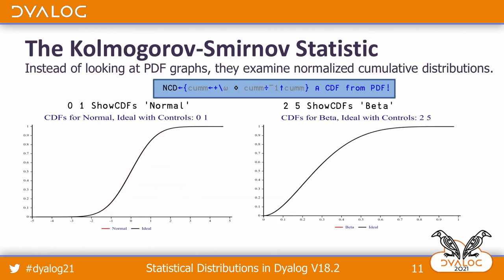What they actually do is look at what's called a normalized cumulative distribution. This expression shows how you get a normalized distribution from a PDF: you just do a sum scan on the PDF and then divide by the last number in the series. This shows a couple of CDFs for the normal distribution and for the beta distribution.